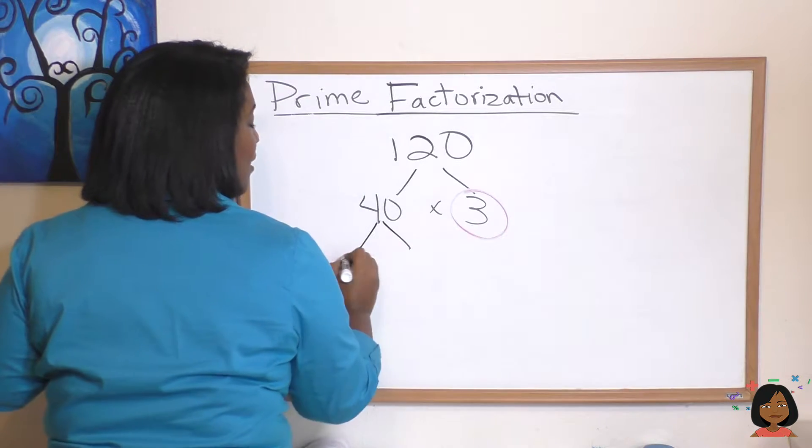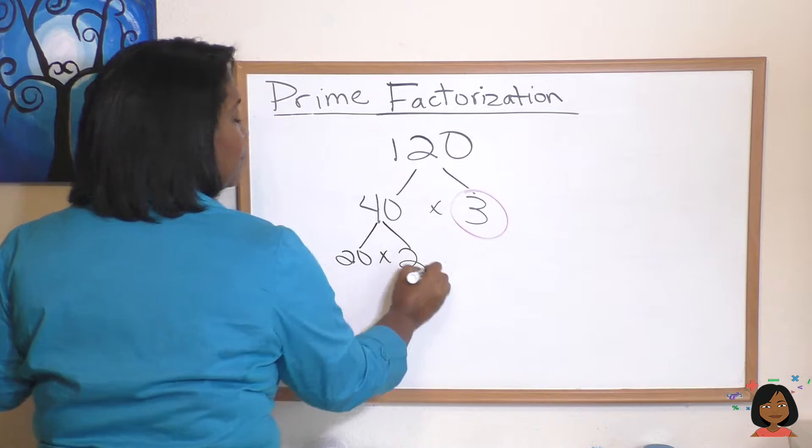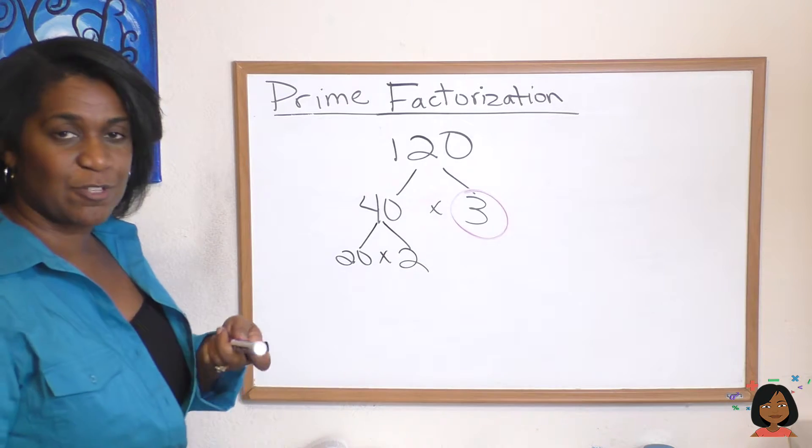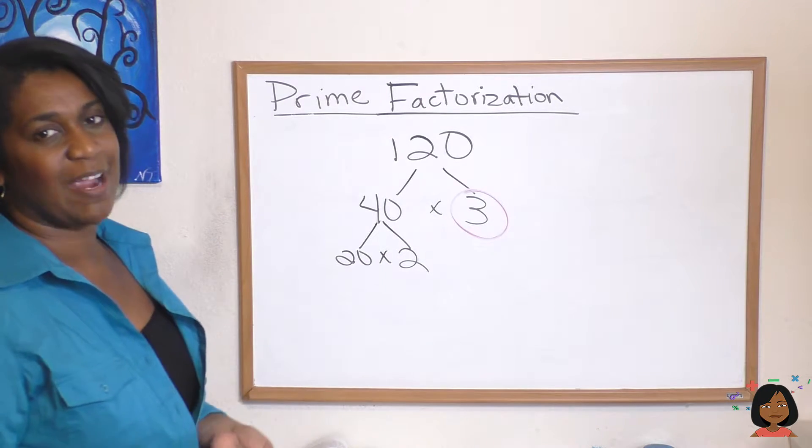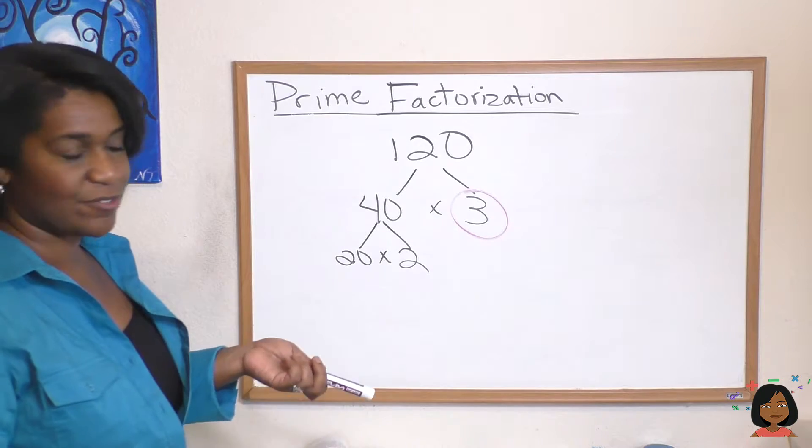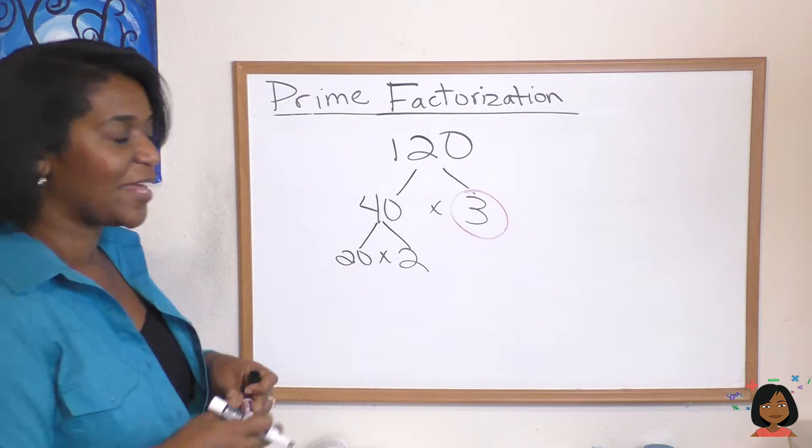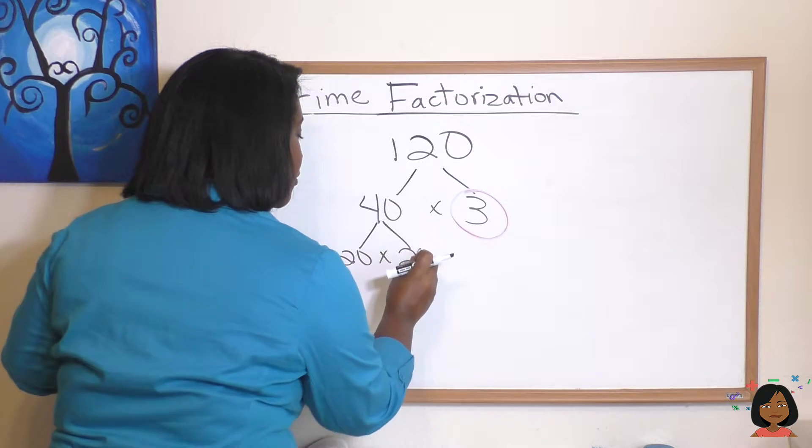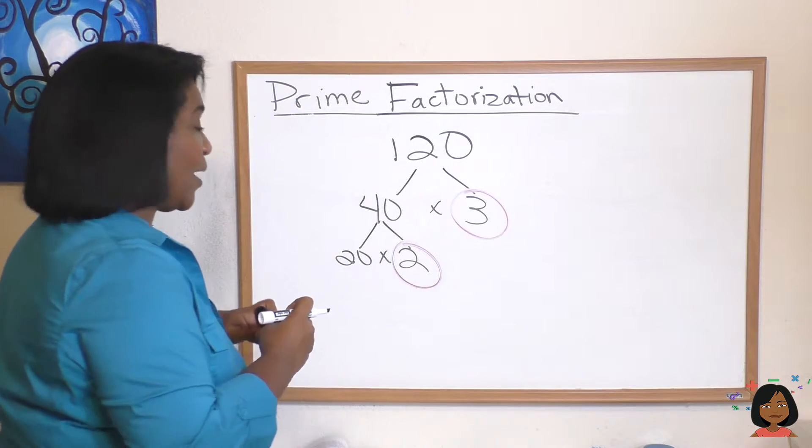And I look and see are these numbers prime? Well 20 is not because we know it's even and there's some factors there. But 2 is prime. It's the only even number that is prime. So we're done with the 2. We're going to keep going on the 20.